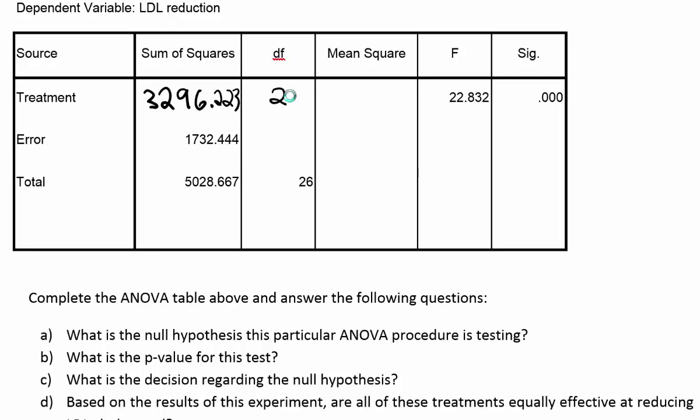The treatment degrees of freedom plus the error degrees of freedom must add up to the total degrees of freedom. So 2 plus what equals 26? The answer is 24. If you have the total degrees of freedom and one of the other two, you can simply subtract to find the missing degrees of freedom.